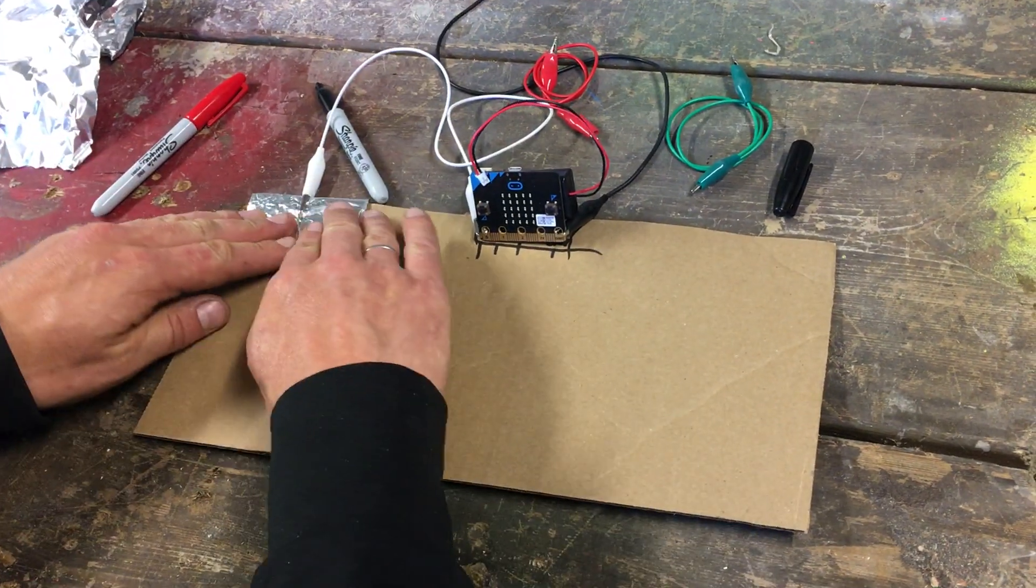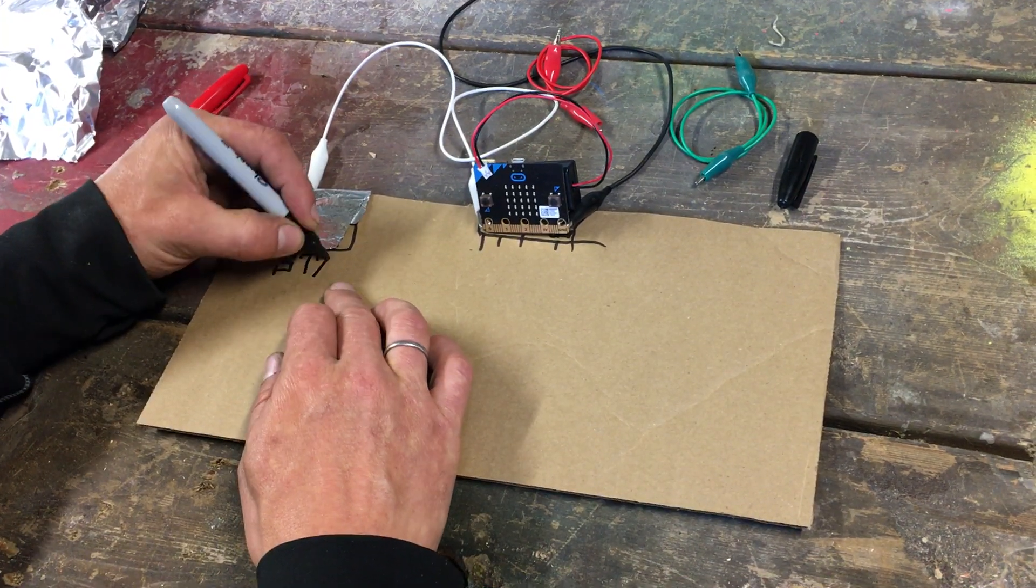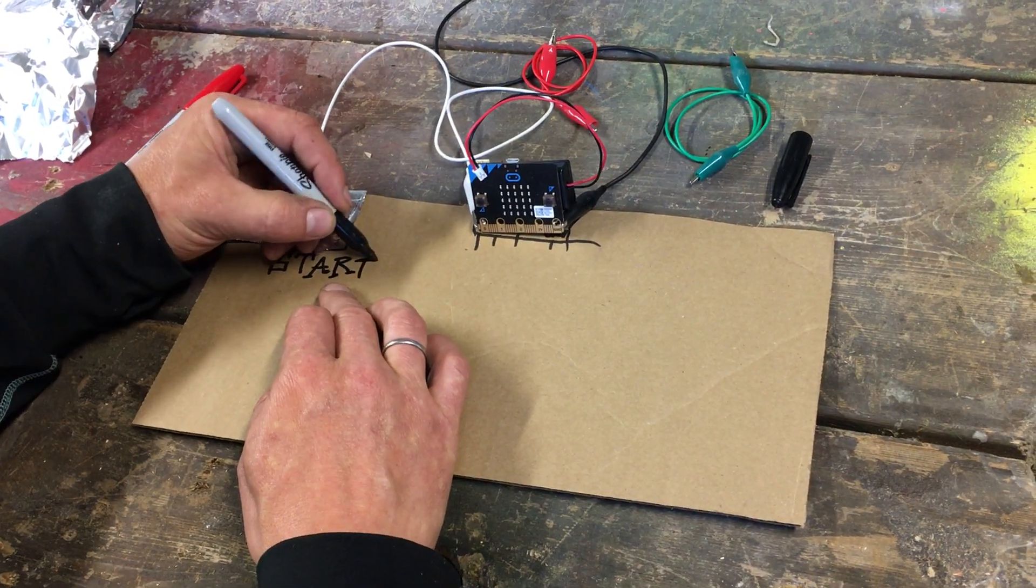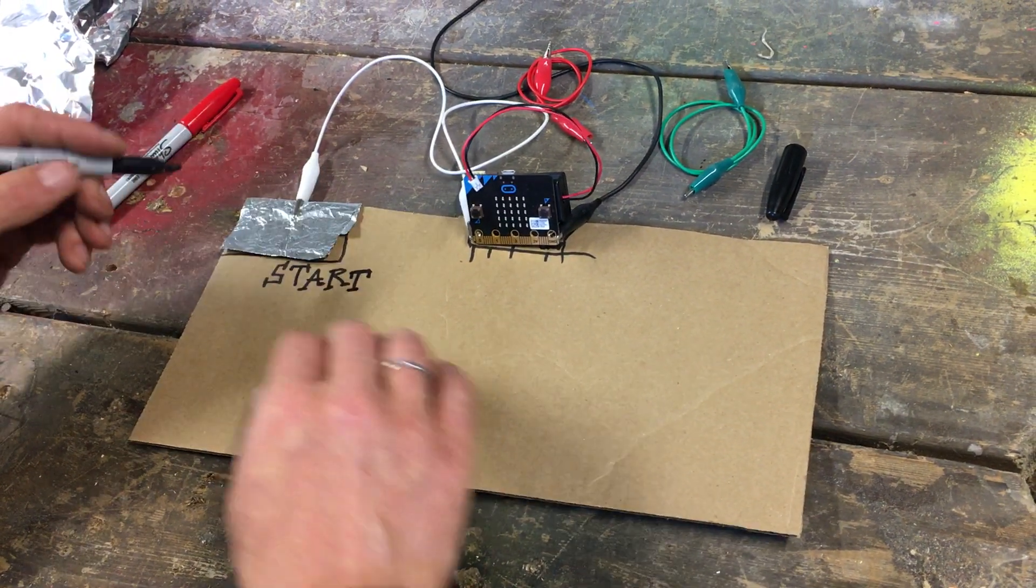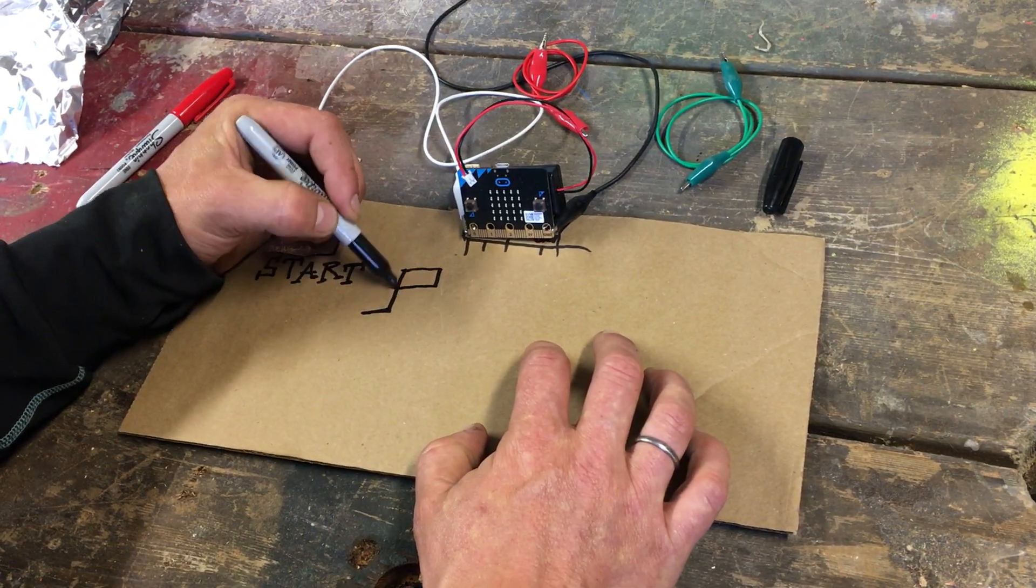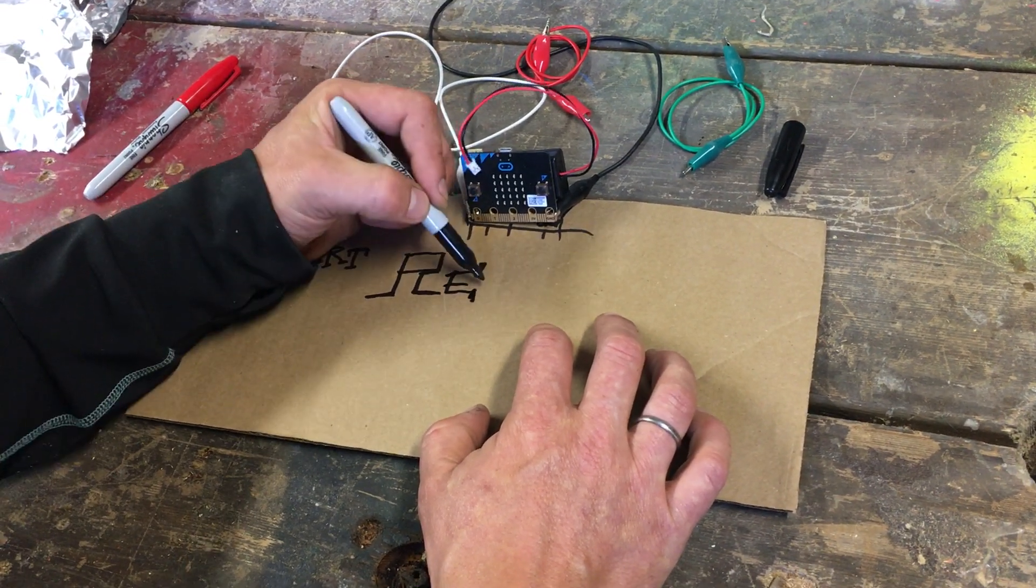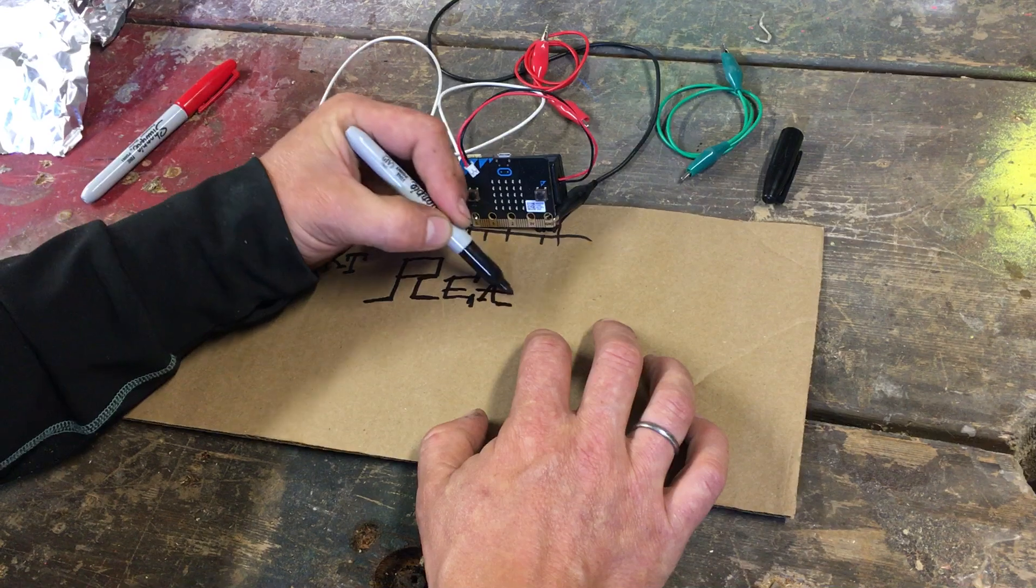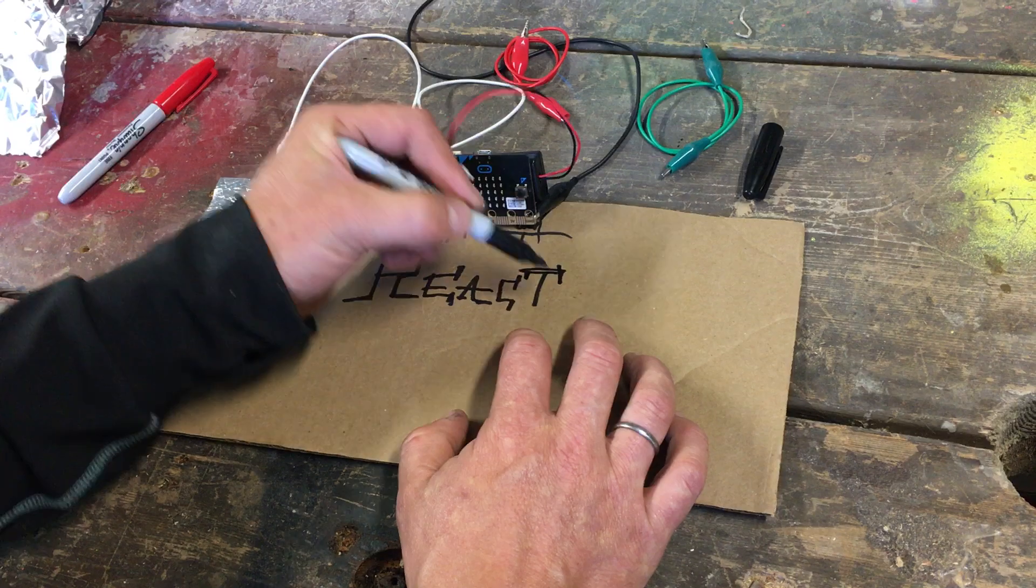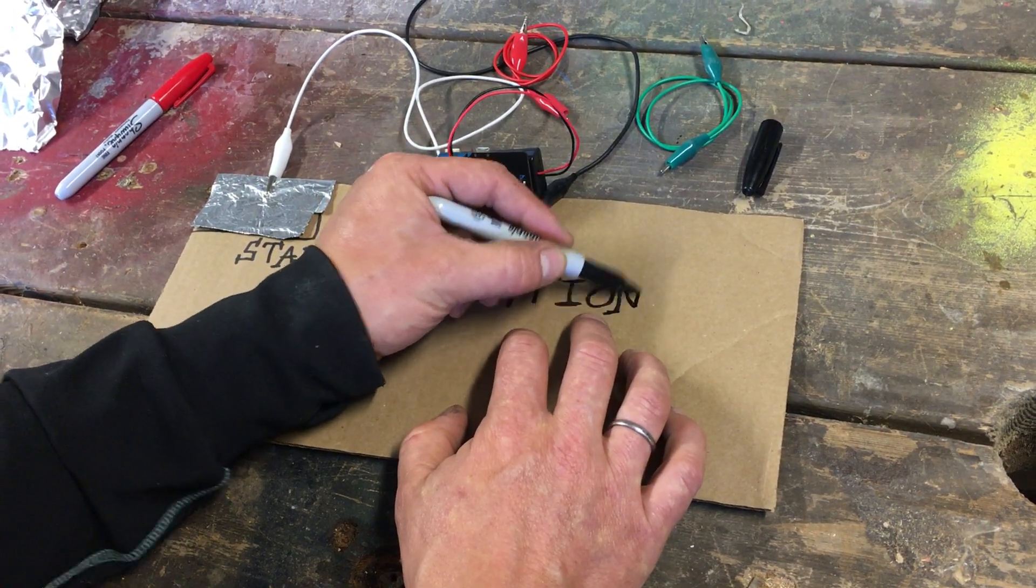That's going to be my start button, so I'm going to mark it as 'start' using my best art possible. That's the button users are going to press to start the reaction game. It looks like people are actually going to power the micro:bit by completing the circuit with their hand press.